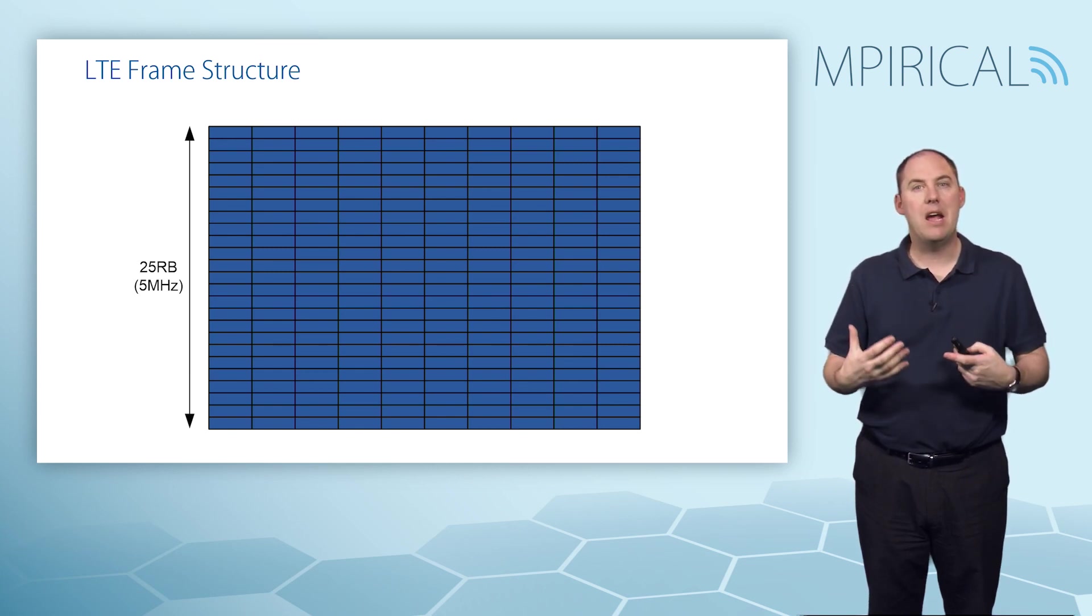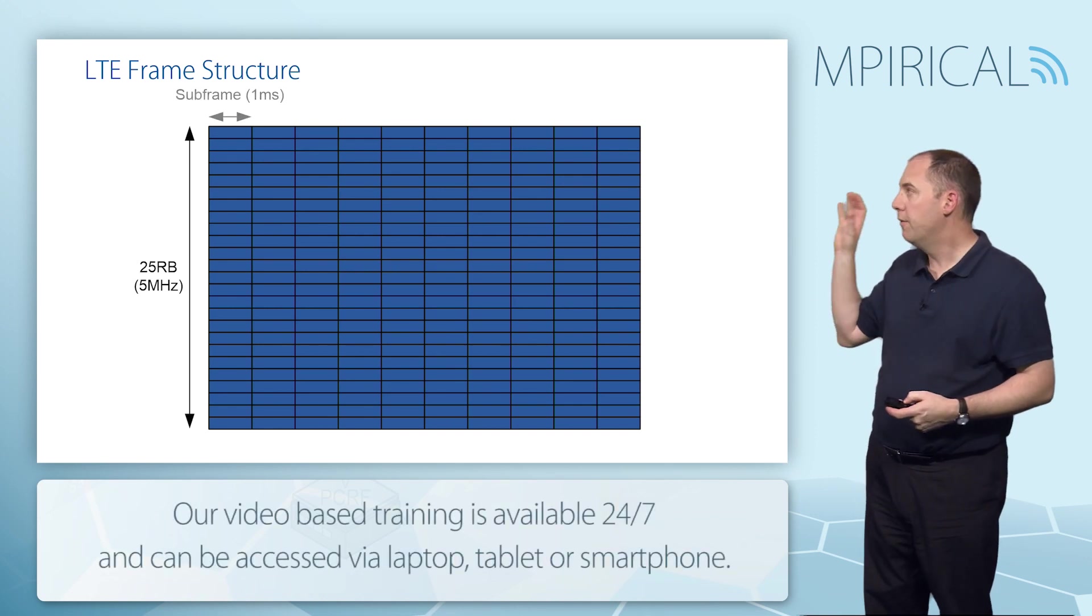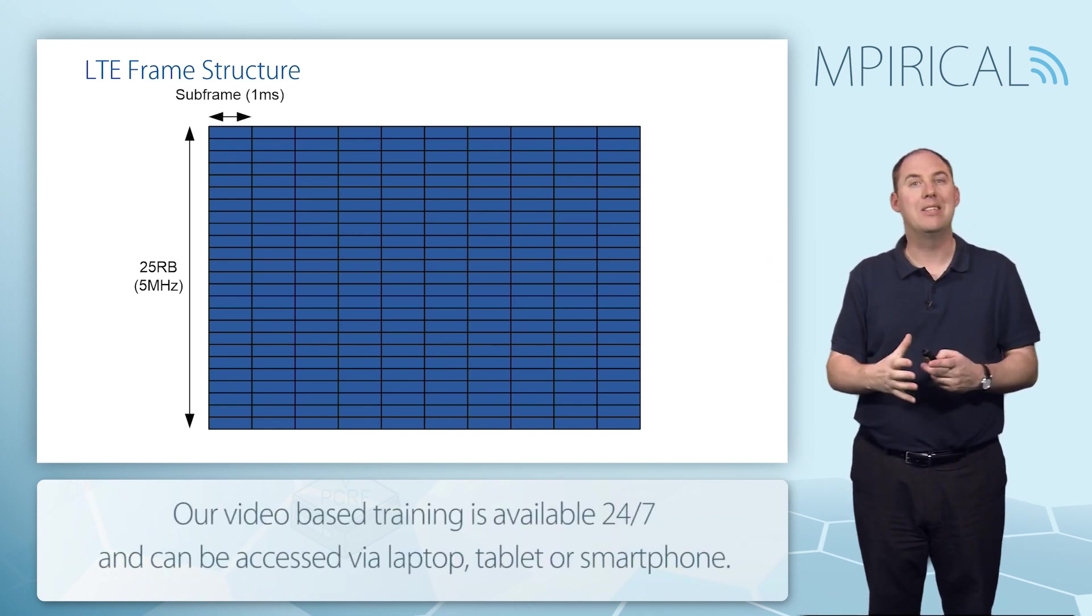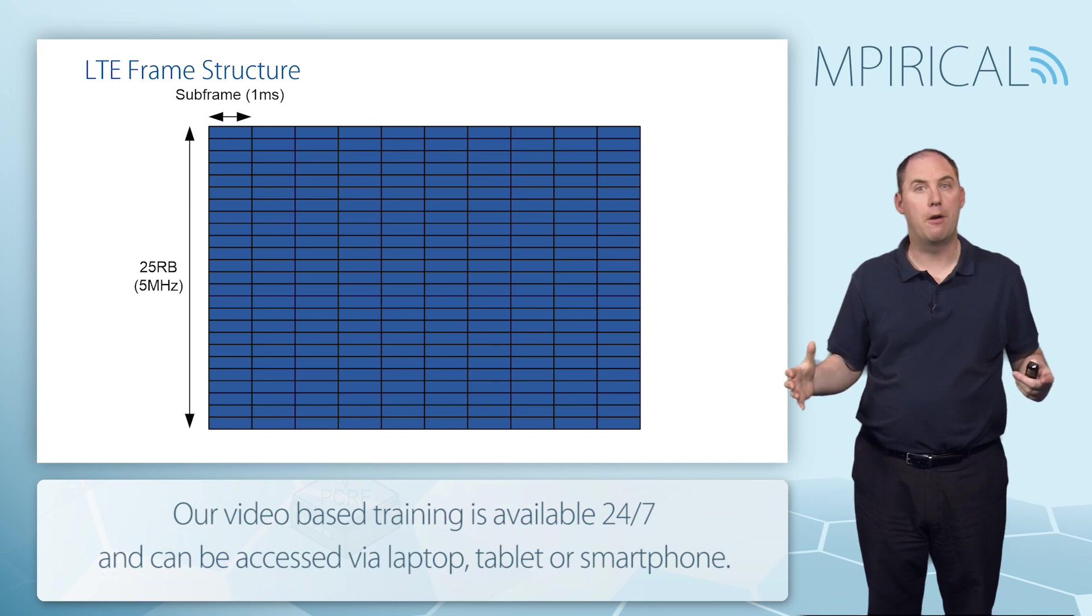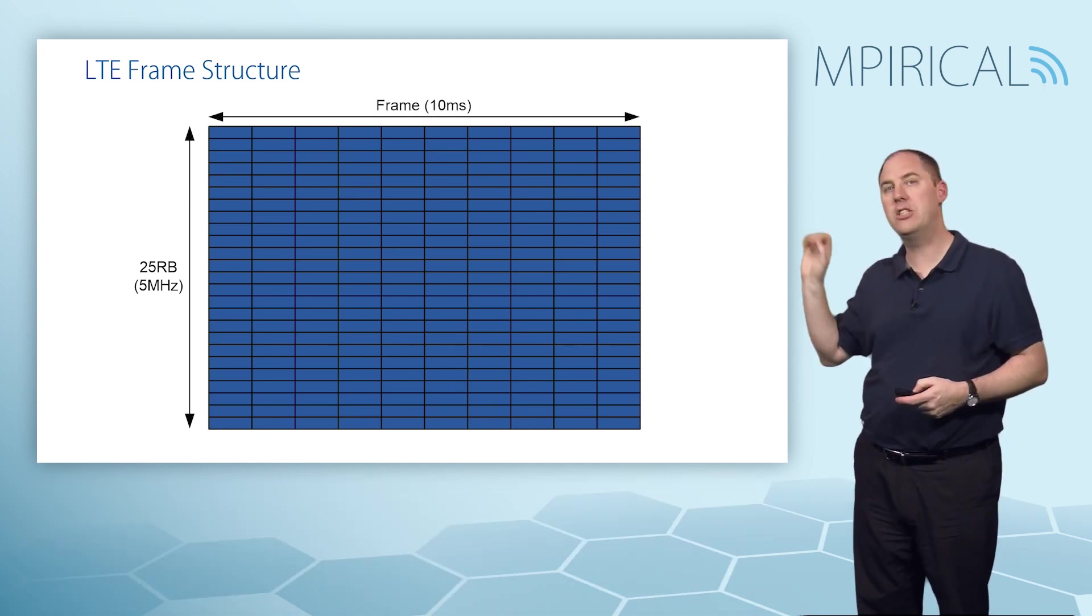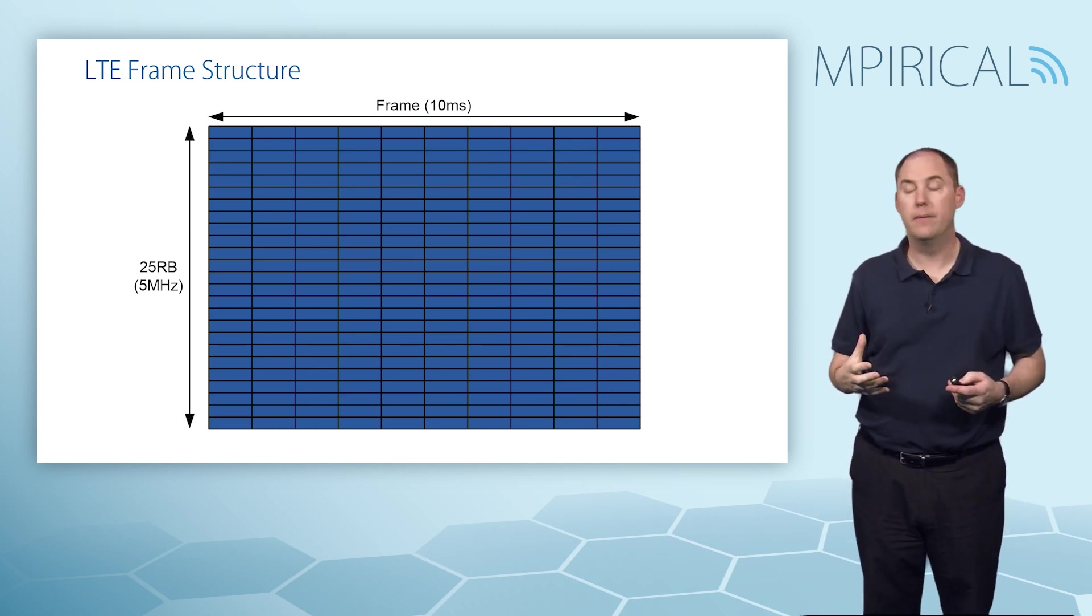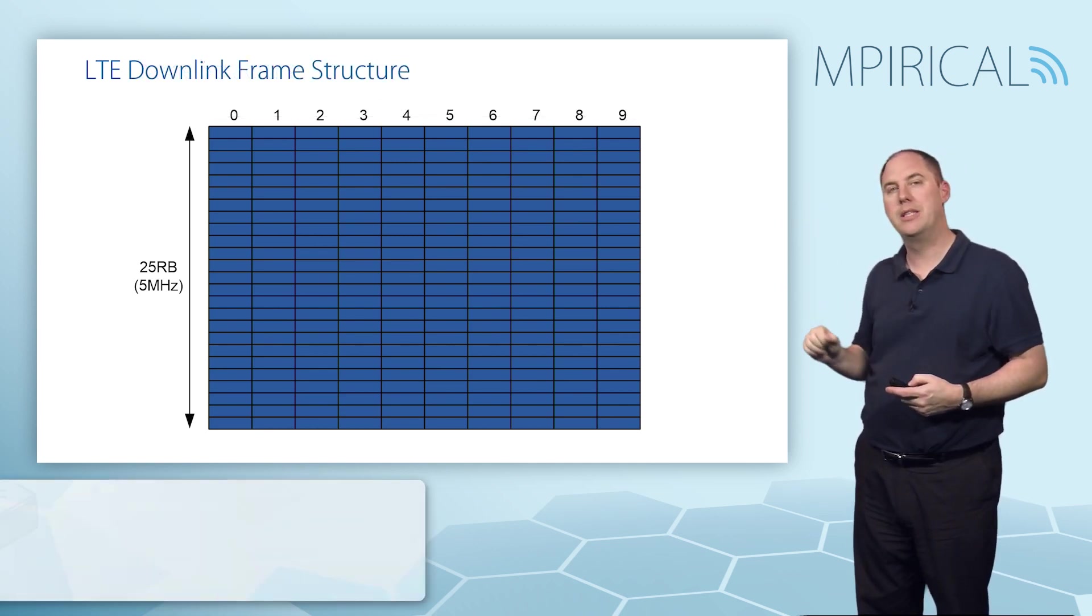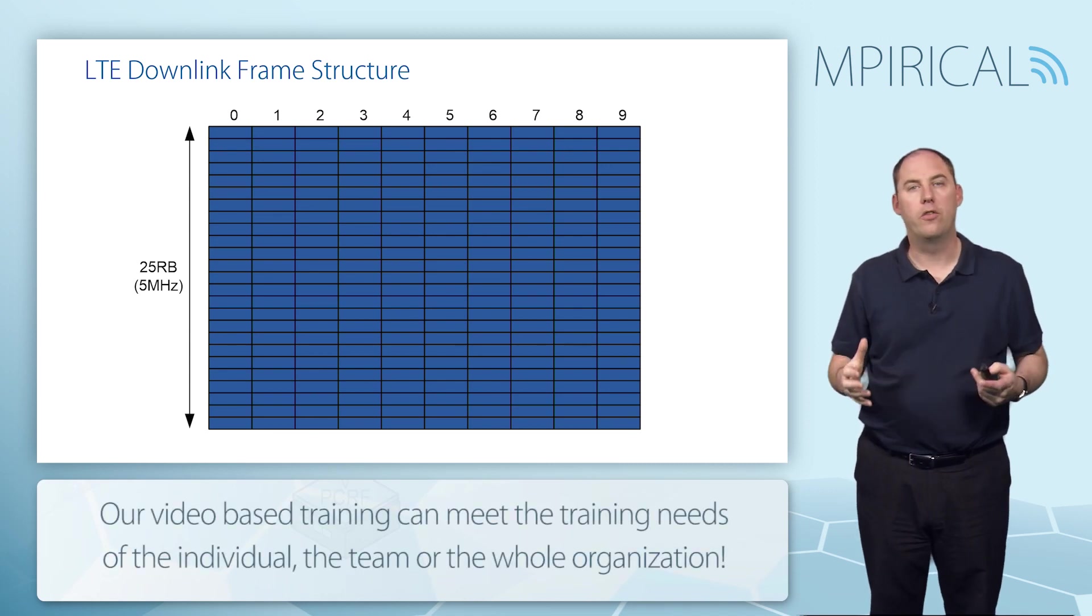The LTE interface is split into what's called frames and sub-frames. The sub-frame lasts a millisecond, so there are 10 sub-frames within a frame, and a frame lasts 10 milliseconds. Each of these sub-frames is given a number, so you can see here number 0 to 9 is identifying the sub-frames.